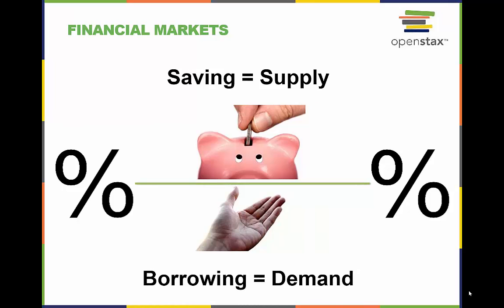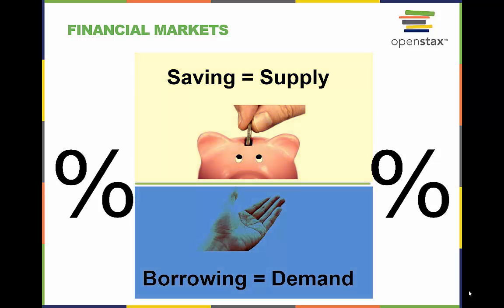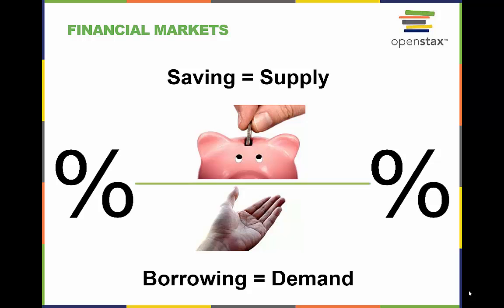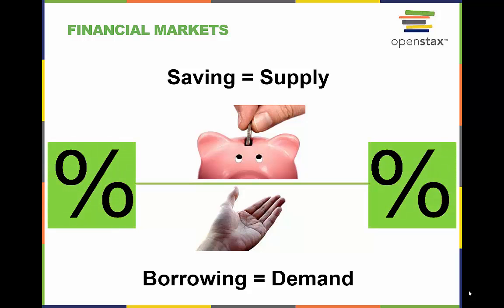When we take a look at financial markets, where trillions of dollars are circulated each year, we can see supply and demand at work. When people save their money, that becomes the supply side of the equation. When people borrow money, that is the demand side. How much is saved and borrowed is the quantity of financial capital, and the price of saving and borrowing is determined by the interest rate or the rate of return.